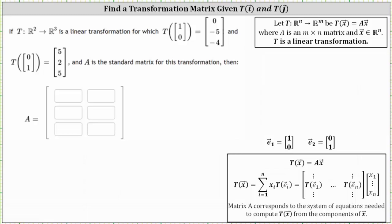If the transformation from R² to R³ is a linear transformation for which T of (1, 0) equals (0, -5, -4), and T of (0, 1) equals (5, 2, 5), and A is the standard matrix for this transformation, then what is matrix A?